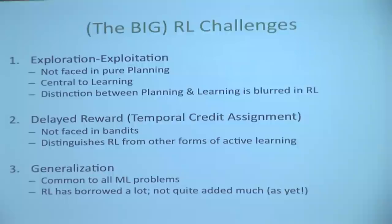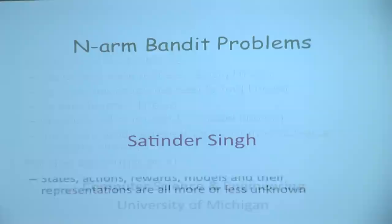We're now moving to the bandit setting, which is purely focused on exploration-exploitation. This is what's called an N-arm bandit. What's a one-arm bandit? A one-arm bandit is a slot machine — you pull the arm and you get some reward or not. That's a one-arm bandit; there you really have only one choice. In an N-arm bandit, you have N arms and you can pull any of the N arms whenever you want. When you pull an arm, you get a random reward.